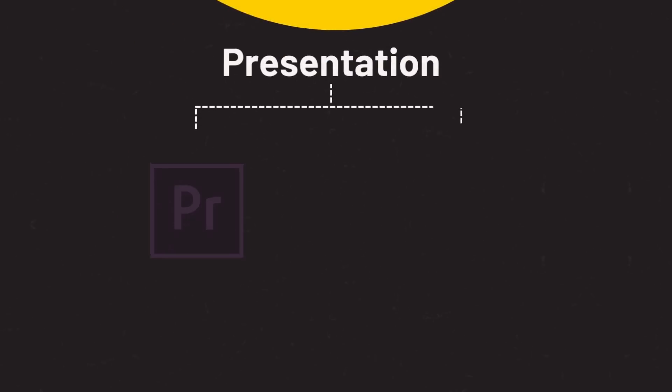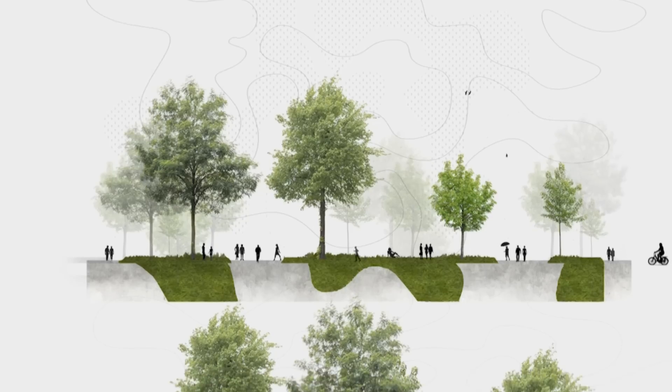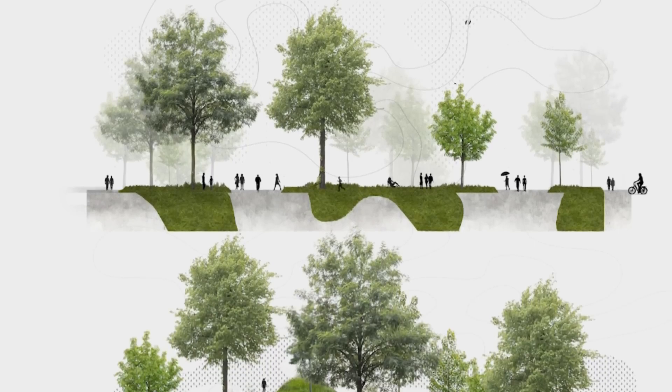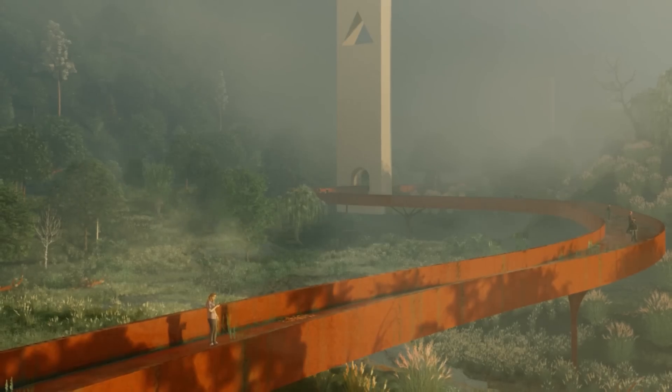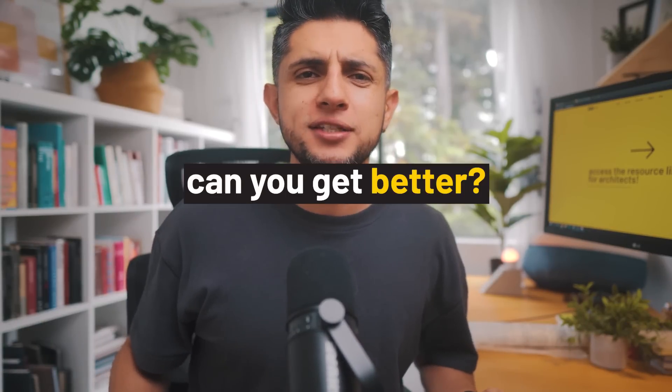For presentation, you will probably add some programs that can help you present in different ways. Learning software like Premiere Pro and After Effects will help you communicate your architectural ideas through video form, which in today's world is always necessary. So now you look like an architect that can receive almost any task and know how to deal with it — but can you get better than this? Of course.